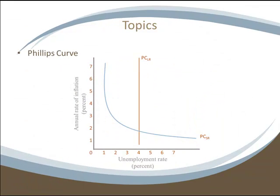The Phillips curve has shown up on the FRQ portion of the exam several times in the last few years. Remember, there is a movement along when aggregate demand changes and a shift in the opposite direction when aggregate supply changes. The long-run Phillips curve is not impacted by fiscal or monetary policy and represents the natural rate of unemployment in the economy.